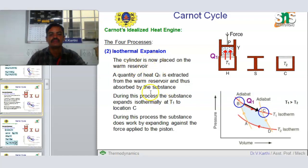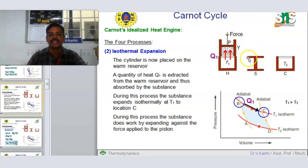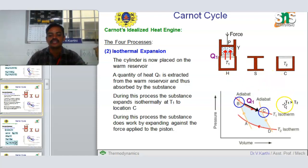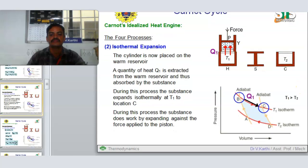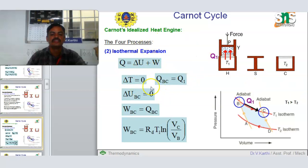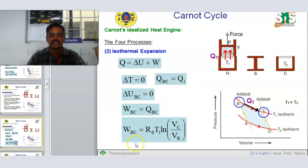The second process is isothermal expansion. The cylinder is now placed on the warm reservoir. A quantity of heat Q1 is extracted from the warm reservoir and absorbed by the substance. During this process, the substance expands isothermally at temperature T1, from B to C. The substance does work by expanding against the force applied to the piston. For the isothermal process, the change in internal energy ΔU equals 0 at constant temperature, so Q1 equals W_BC, and W_BC equals nRT1 times ln(Vc/Vb).